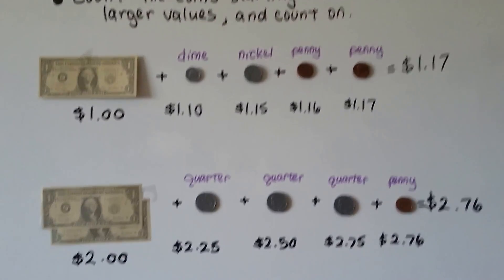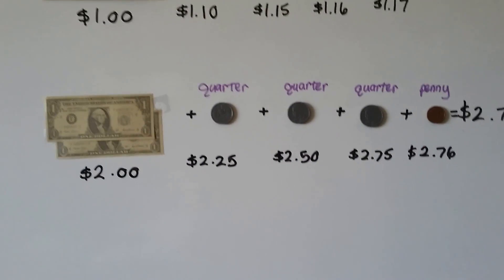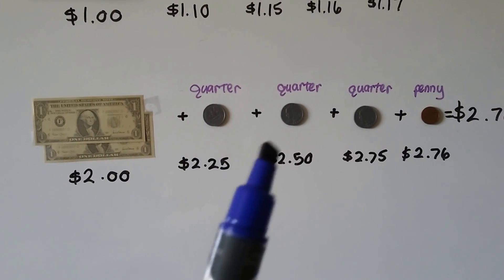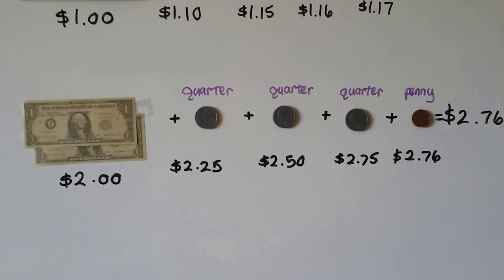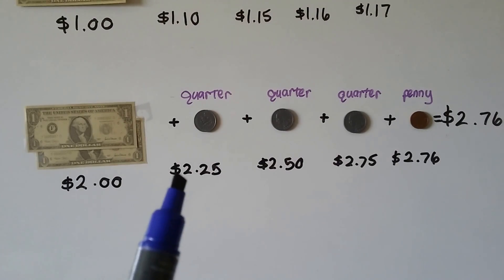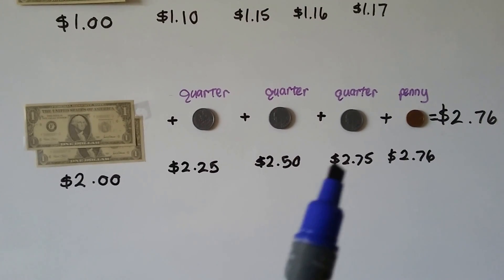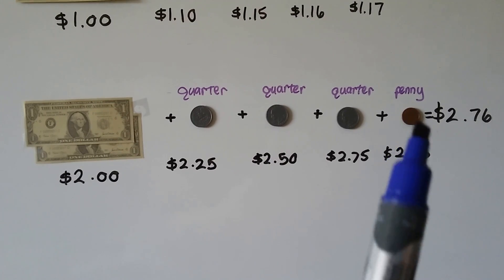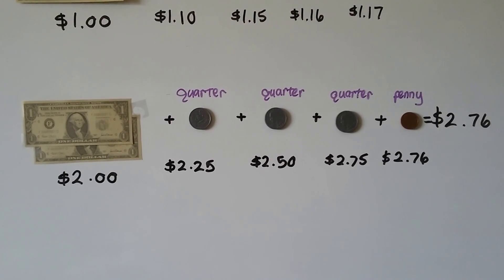Let's look at this one. We have two one dollar bills, a quarter, another quarter, another quarter, and a penny. So we can skip count these by 25s. We have two dollars, then we have $2.25, $2.50, $2.75, and that one penny makes it $2.76.